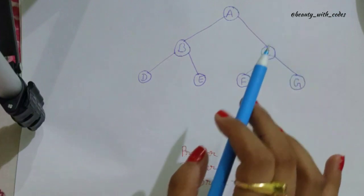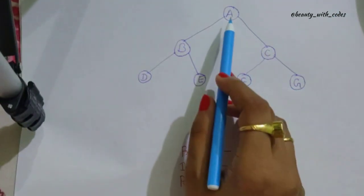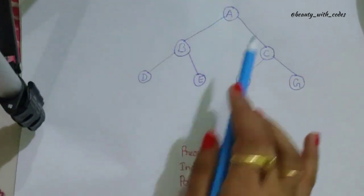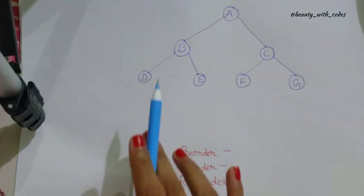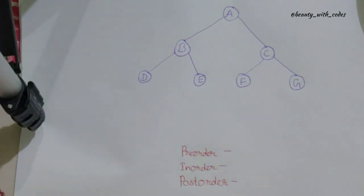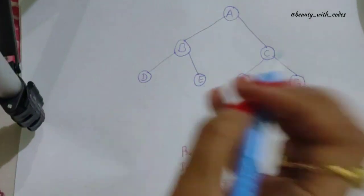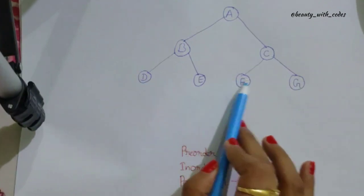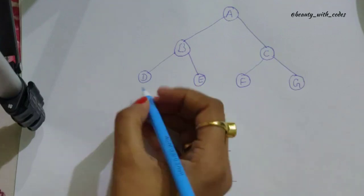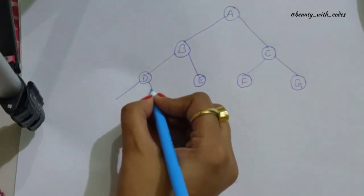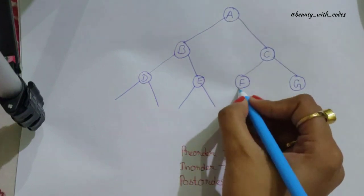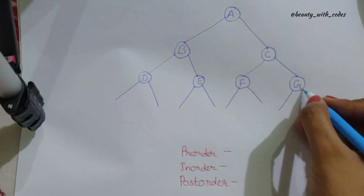This is a binary tree because each node has at most two children. A is the root node because it doesn't have a parent. D, E, F, and G are leaf nodes because they do not have children. The first step is to add dummy nodes to all the leaf nodes. We add two dummy nodes to each leaf node to keep it a binary tree — we cannot add more than two.